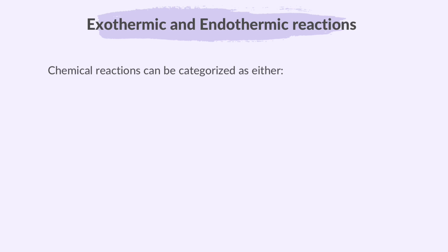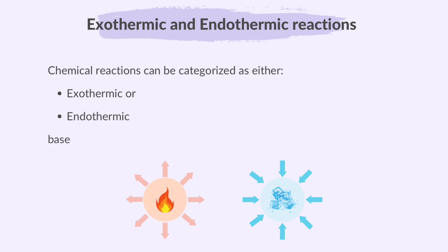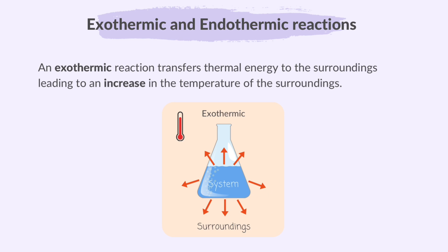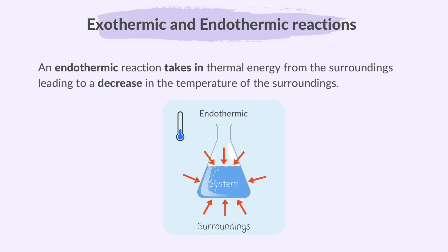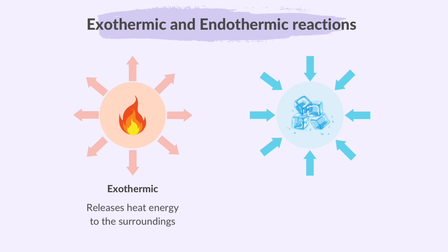Chemical reactions can be categorized as either exothermic or endothermic based on their heat exchange with the surroundings. An exothermic reaction transfers thermal or heat energy to the surroundings, leading to an increase in the temperature of the surroundings. An endothermic reaction takes in thermal or heat energy from the surroundings, leading to a decrease in the temperature of the surroundings. So exothermic reactions release heat energy while endothermic reactions absorb heat energy.